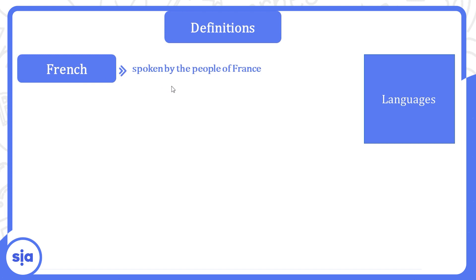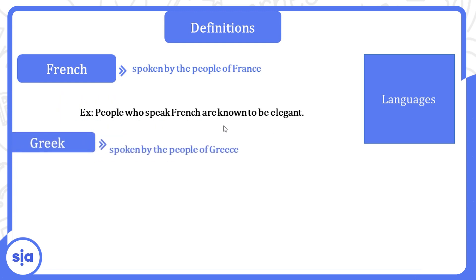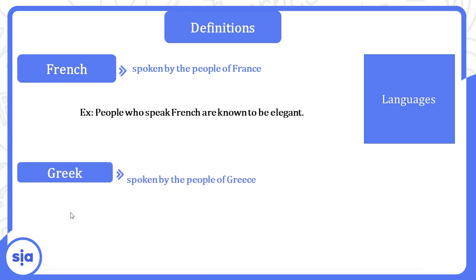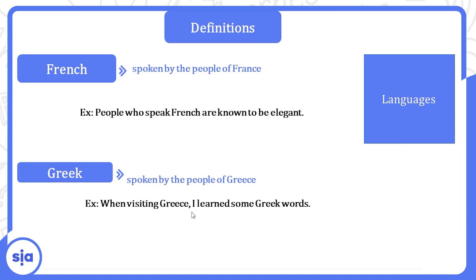French is spoken by the people of France — people who speak French are known to be elegant. Greek — اليوناني — spoken by the people of Greece. Example: When visiting Greece, I learned some Greek words.